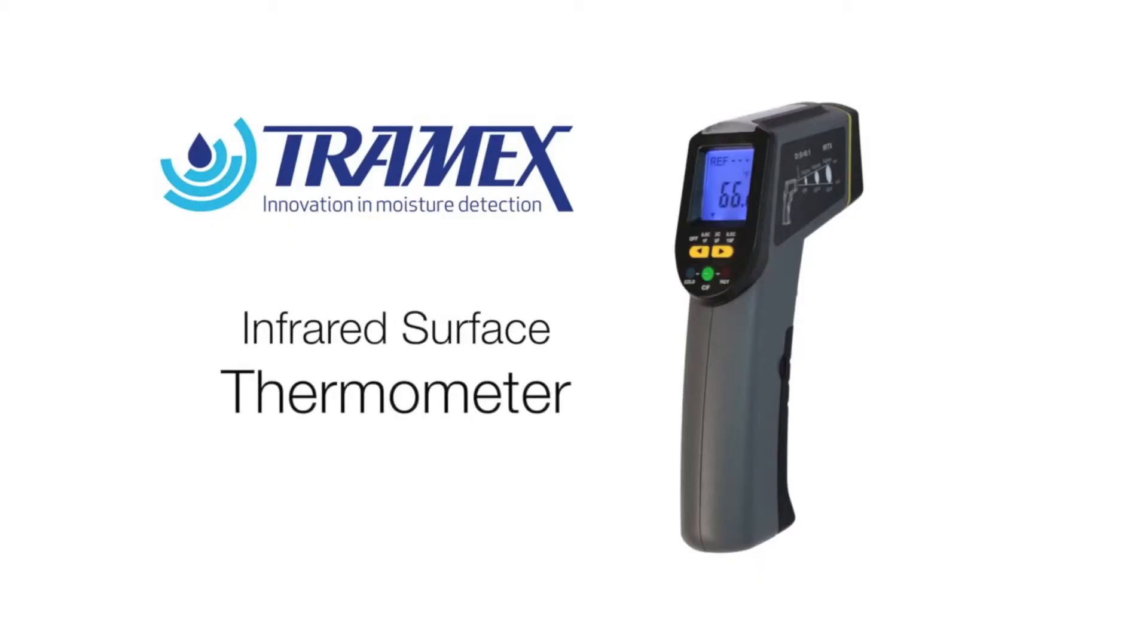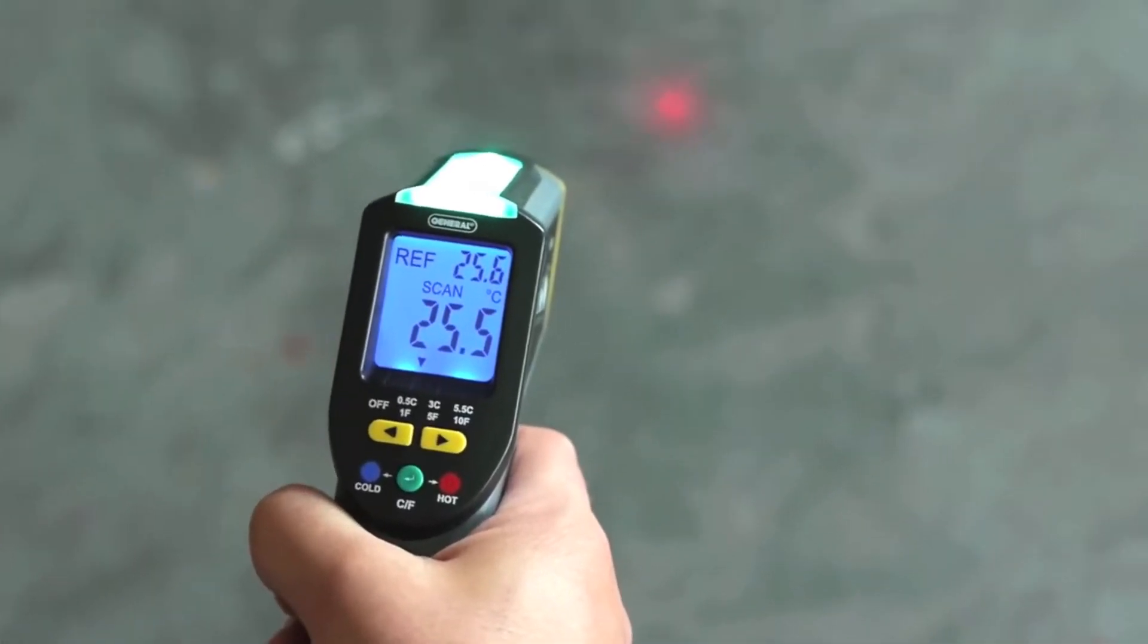By using an infrared surface thermometer in combination with the relative humidity results, it becomes easy to identify condensation problems.